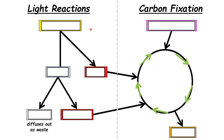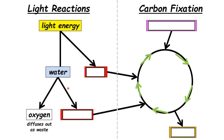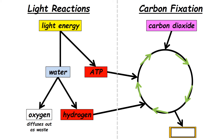See if you can copy and complete the summary flow chart. Top left: light energy. It does two things — it can split water into oxygen (which diffuses out as waste) and hydrogen; and it can be converted to ATP. ATP and hydrogen go into Stage 2, where carbon from carbon dioxide is fixed into glucose.